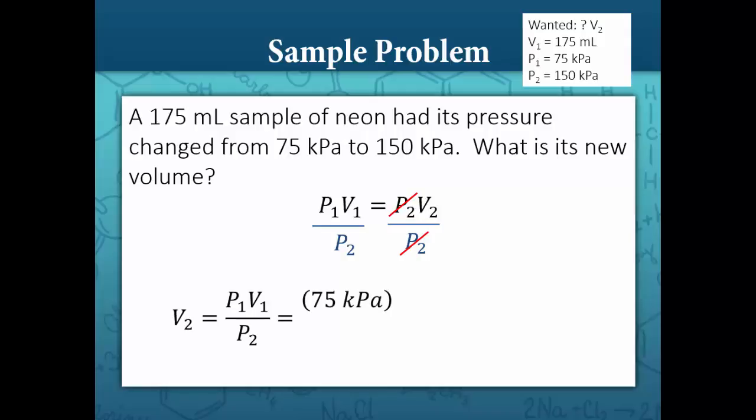P1 is 75 kilopascals, V1 is 175 milliliters all over P2, which is 150 kilopascals. Kilopascals cancel out, and our answer is 88 milliliters in two sig figs. The calculator gave me 87.5, but since our least amount of significant digits is 2, I rounded that to 88 milliliters.